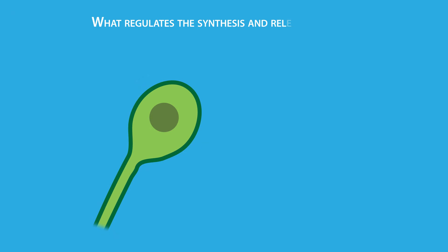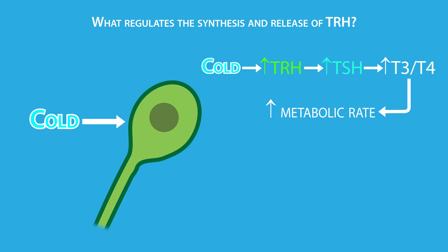So, what regulates the synthesis and release of TRH? A number of physiological factors stimulate or inhibit the synthesis and release of TRH. For example, exposure to cold stimulates the synthesis and release of TRH, which is seen as a protective measure. As the body temperature decreases, the thyroid gland responds by increasing the metabolic rate, which in turn gives off heat and raises body temperature.